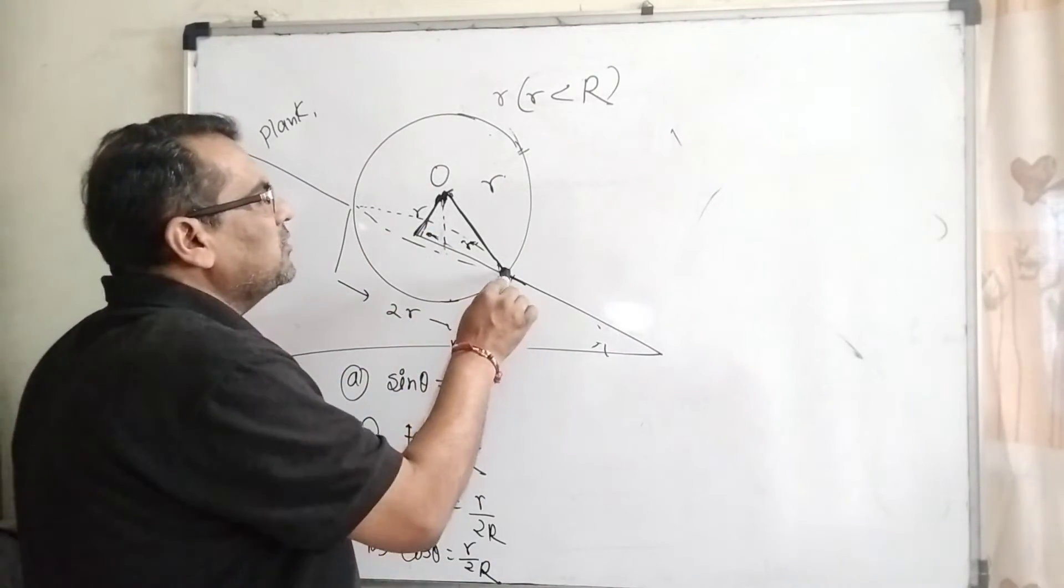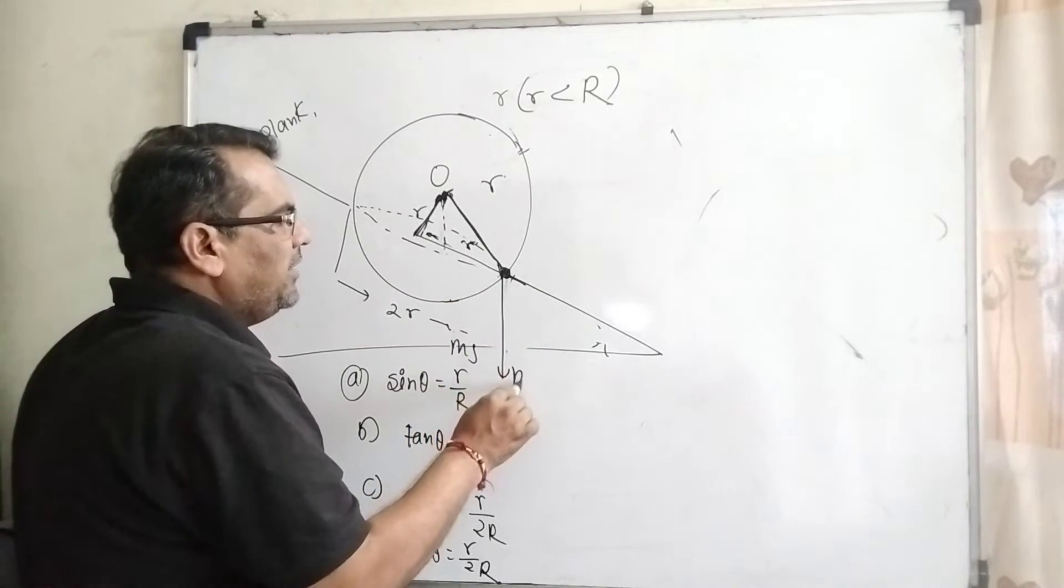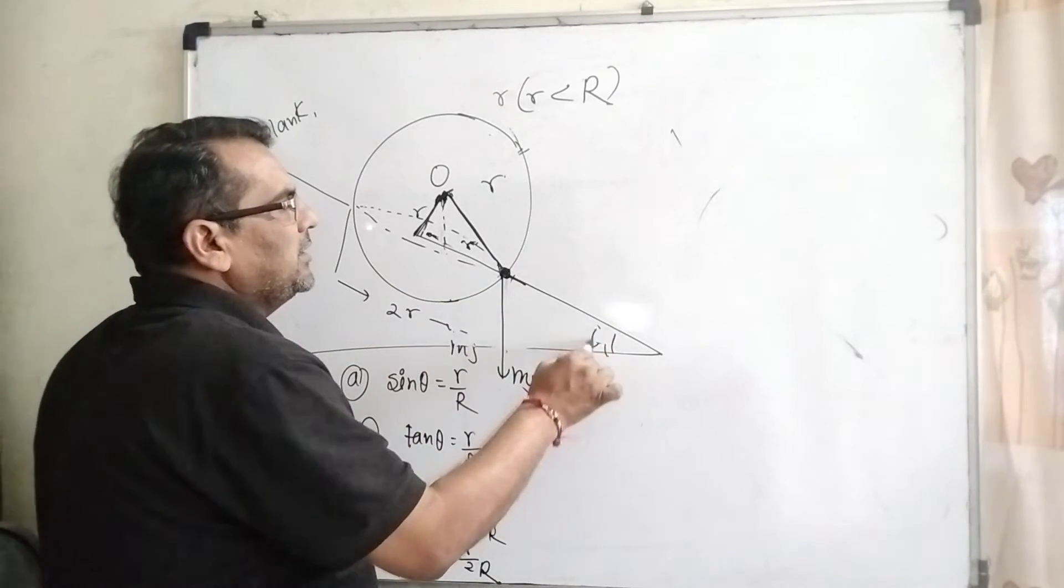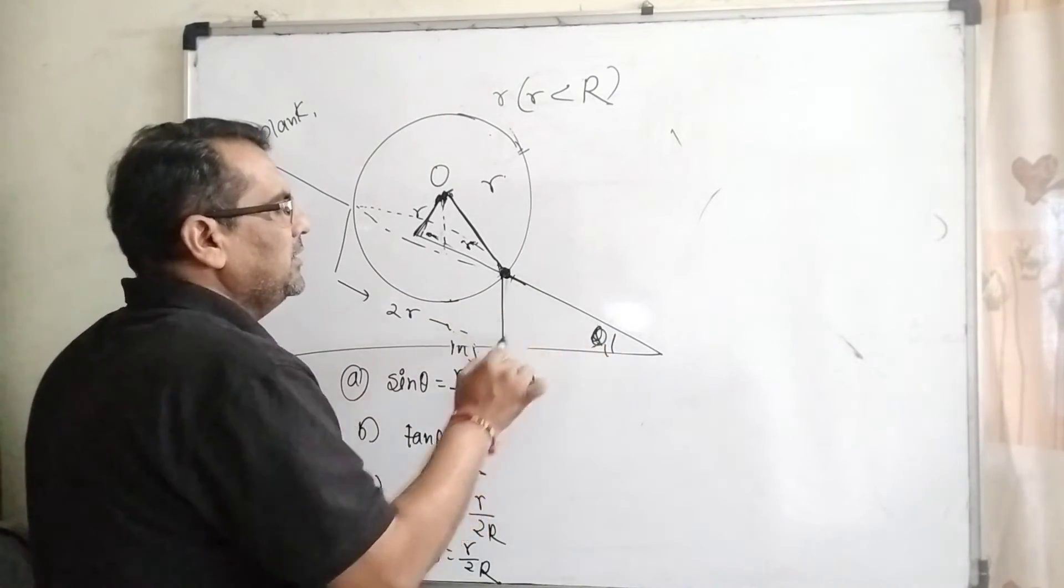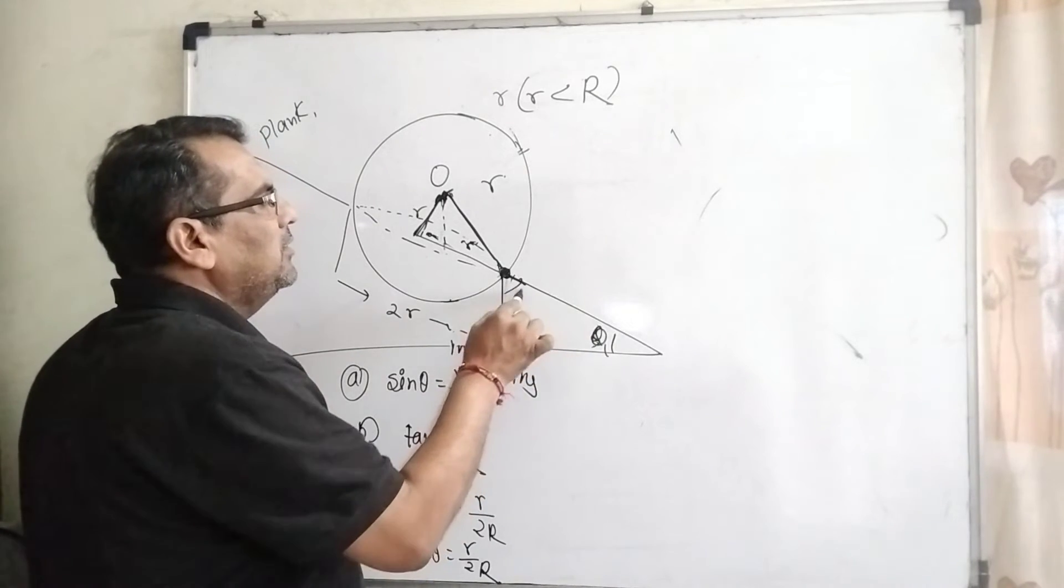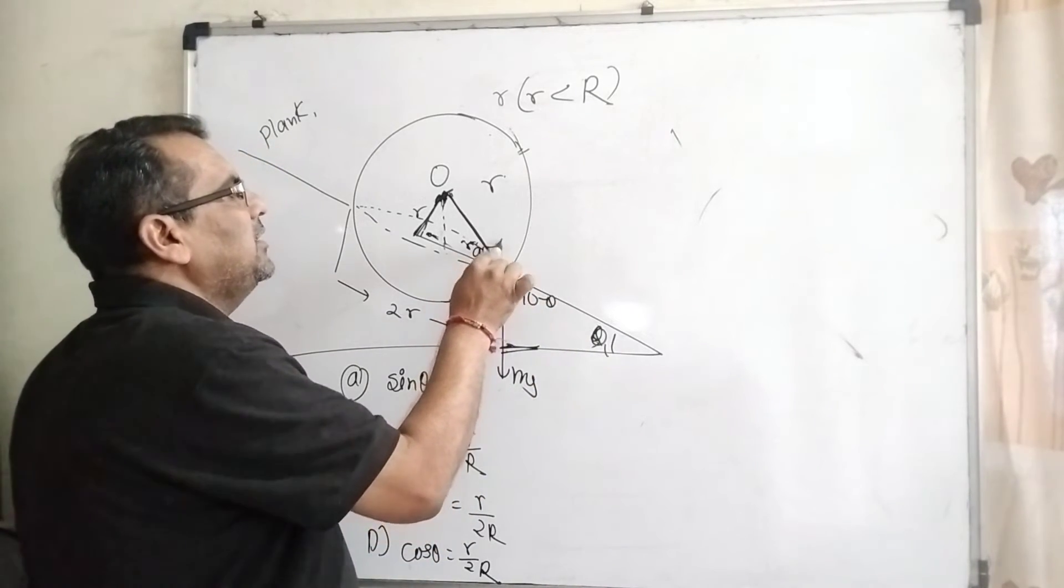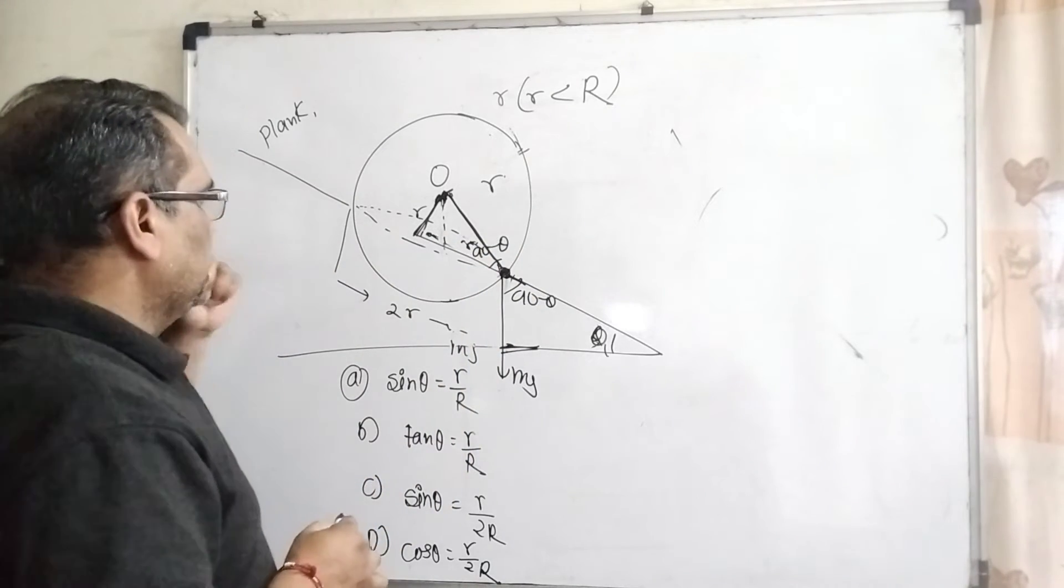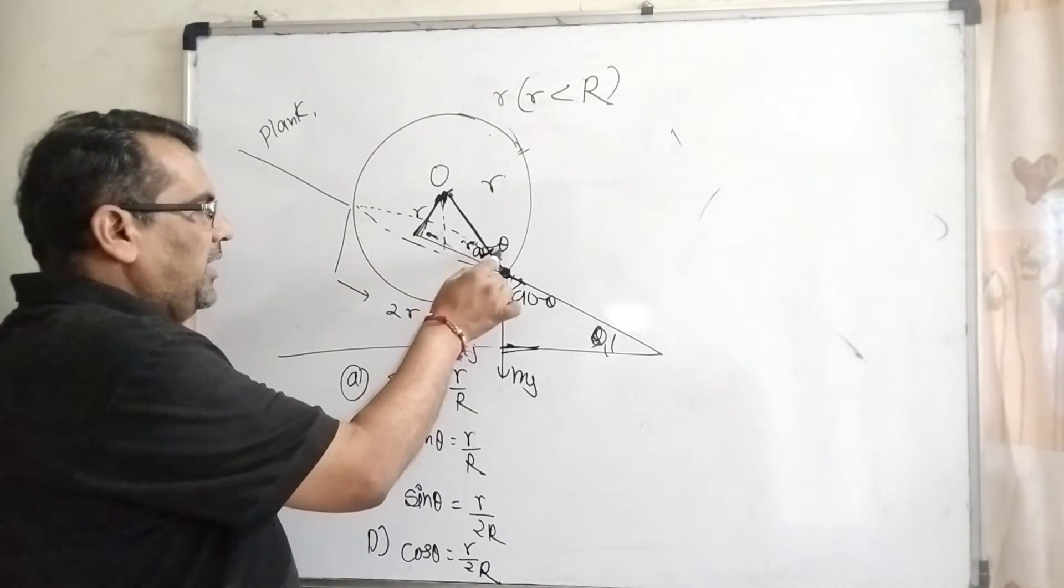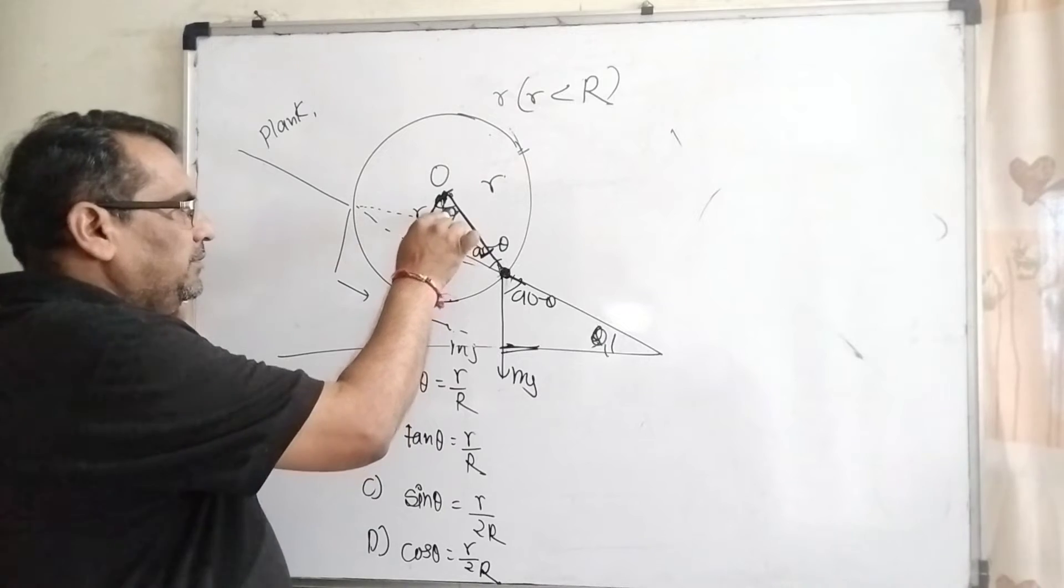This is theta. As you know, this is a complementary angle, so 90 minus theta. Again this is 90 minus theta, vertically opposite angle. So it becomes theta.